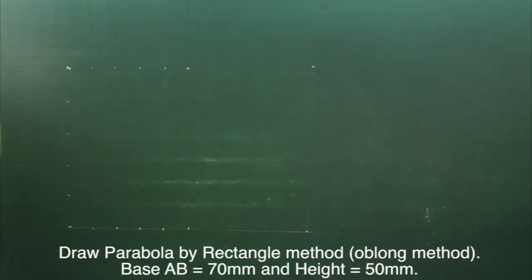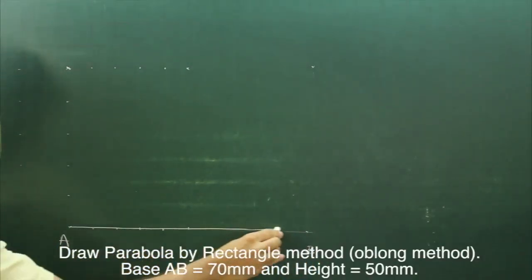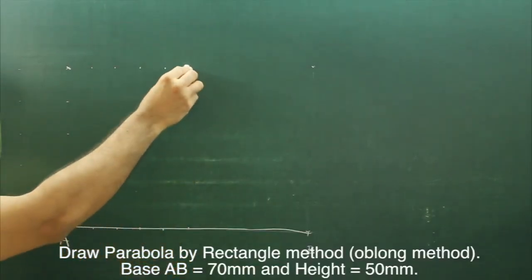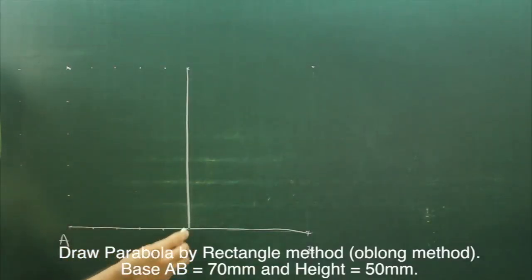Parabola by Rectangle method. First we will draw base AB, then we draw height.